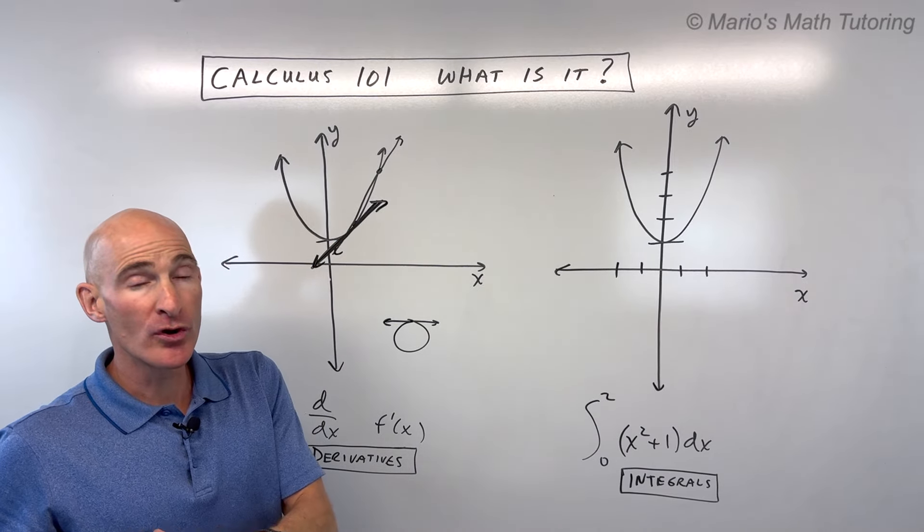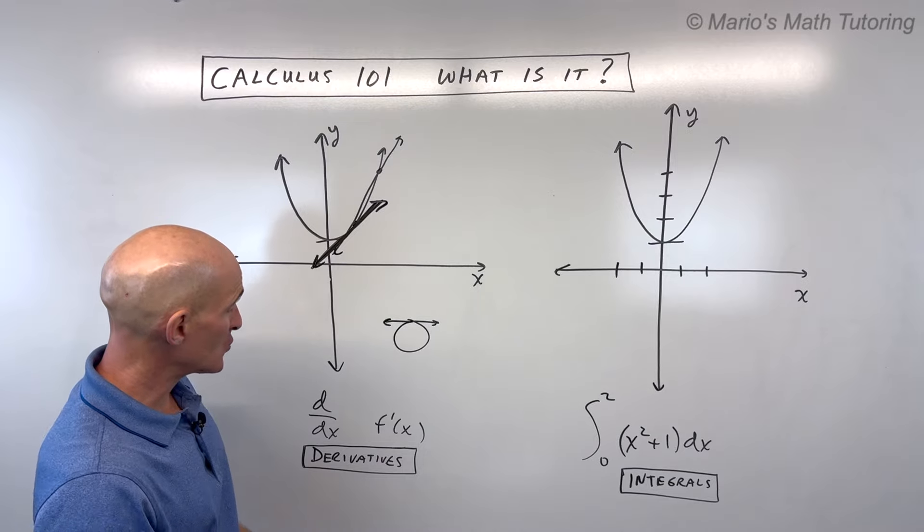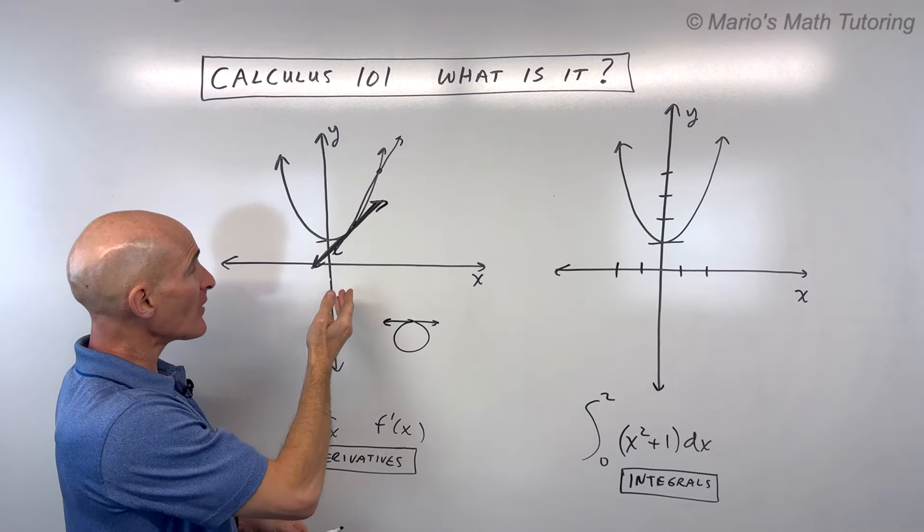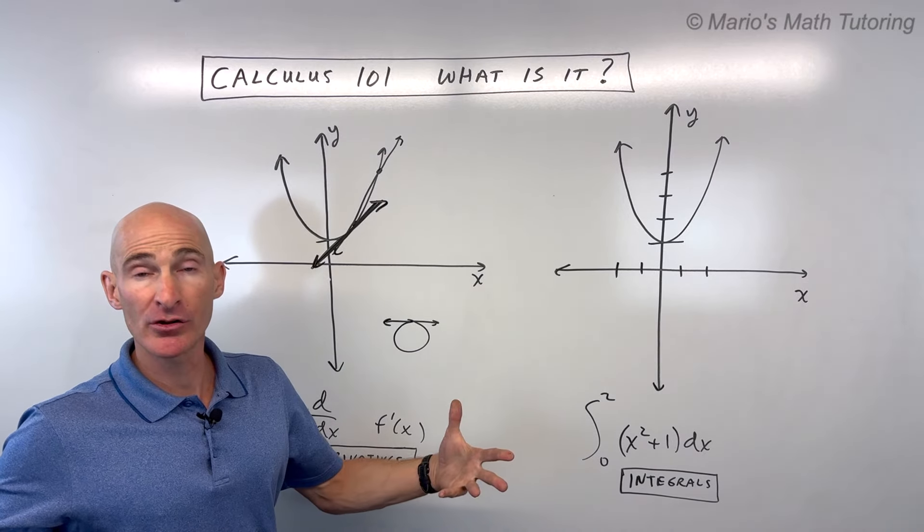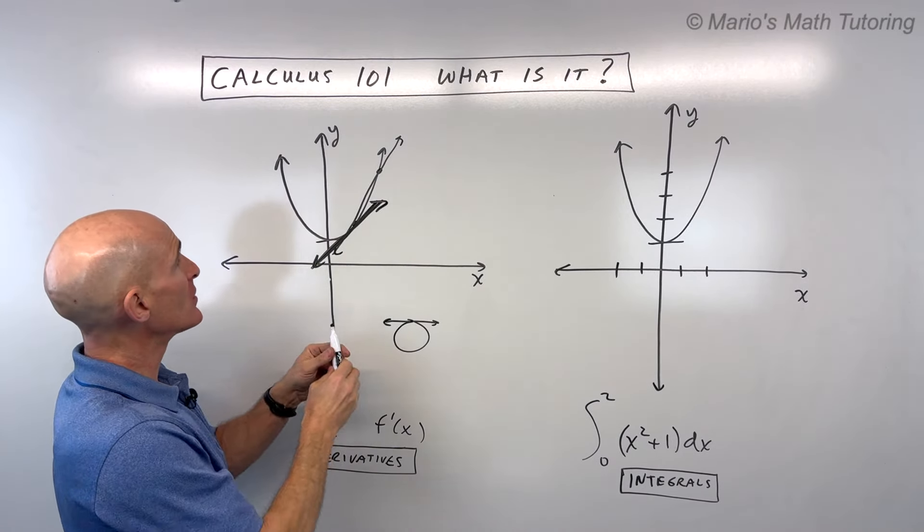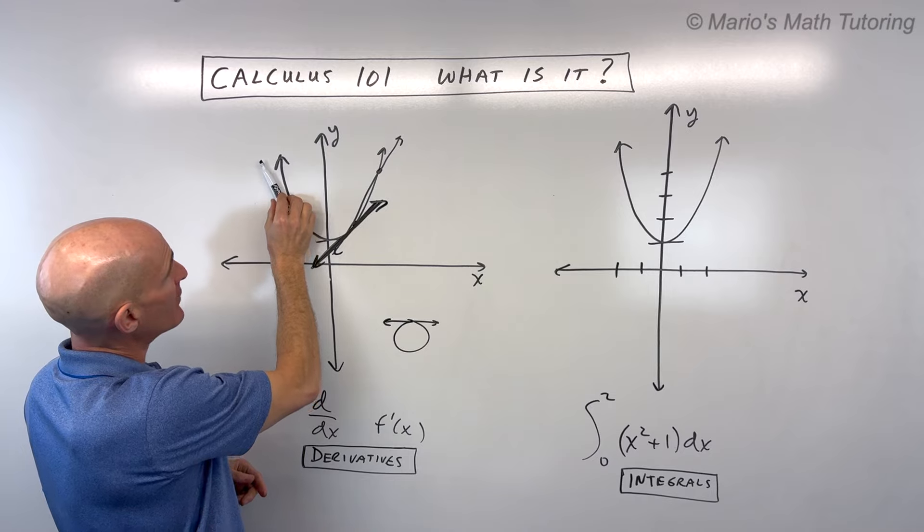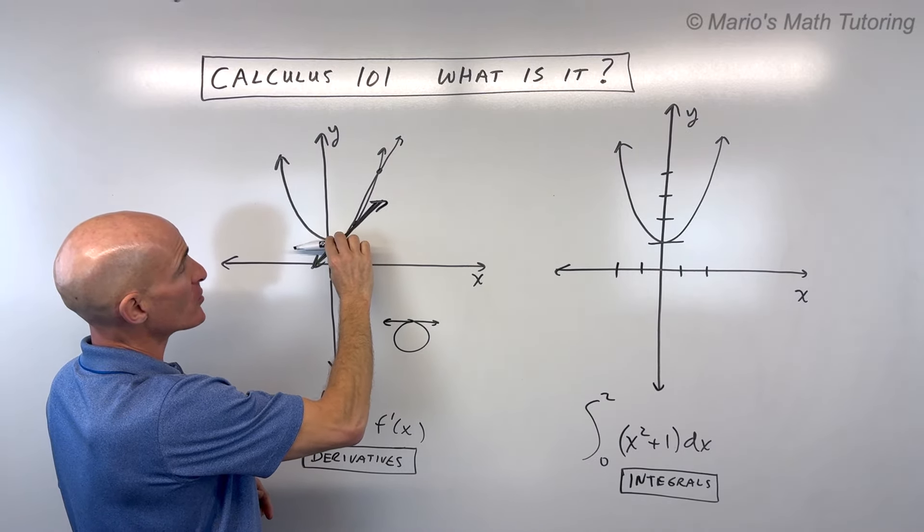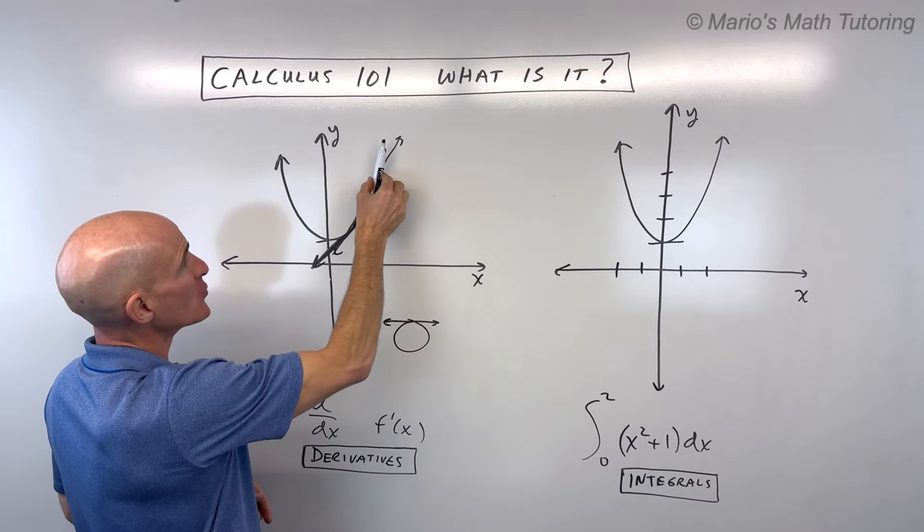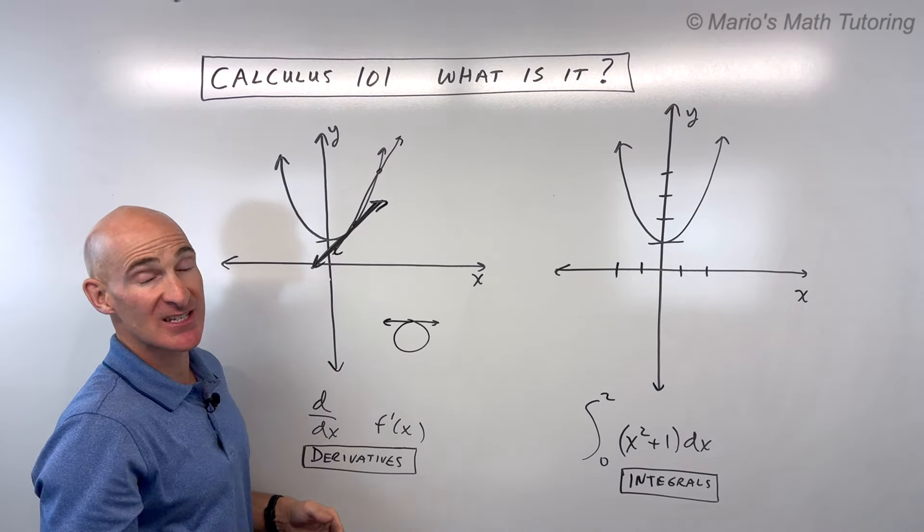Now, when you learn about derivatives, what you're getting is you're getting a formula that will allow you to find the slope of that tangent line at any point along a particular function or graph. So like you can see, if I'm over here, this would have a negative slope. And over here, it would have like a zero slope, it's horizontal. And over here, it has a positive slope and more positive, it's getting even steeper.